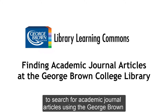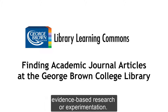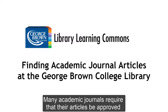This video will demonstrate how to search for academic journal articles using the George Brown College Library website. Academic or scholarly journals contain articles written by experts in the field that describe the results of original evidence-based research or experimentation.